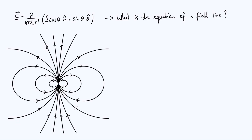Hello everyone! In this video we are going to look at how to derive the equation of an electric field line. This is something I find quite interesting, partially because it doesn't tend to get emphasized so much in physics courses — we spend a lot of time learning how to calculate electric field vectors, then get shown representations in diagrams like the electric dipole field lines shown at the bottom left. But you might not have seen how to actually calculate the polar or Cartesian equation of a single electric field line.